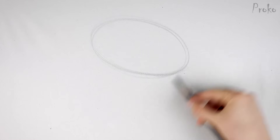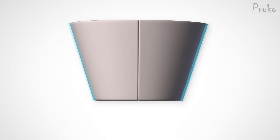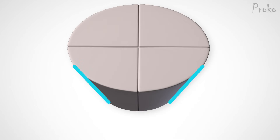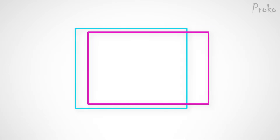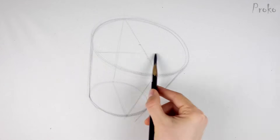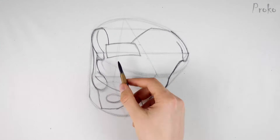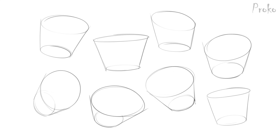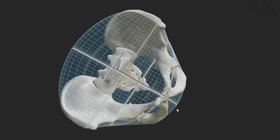After establishing the ellipse, add the side planes. The length depends on how much foreshortening there is caused by the tilt and our point of view — longer lines when there is no foreshortening, shorter lines when there is a lot. You also have to think about the gender differences: a female pelvis is wider and shorter than a male pelvis. Finally, add the bottom cap and that gives a simplified form of the pelvis. There we have a simplified representation of the pelvis as a bucket. In the next lesson, I'll show you how to break it down further to construct the minor forms of the pelvis.